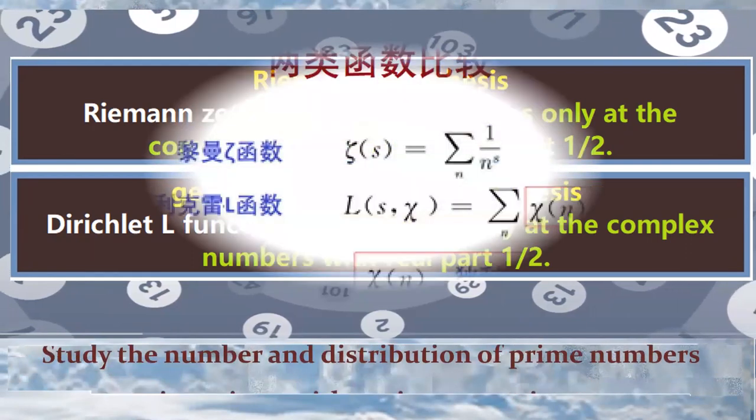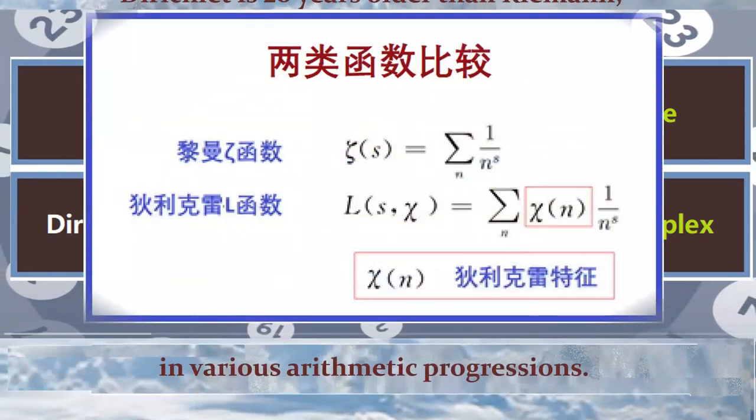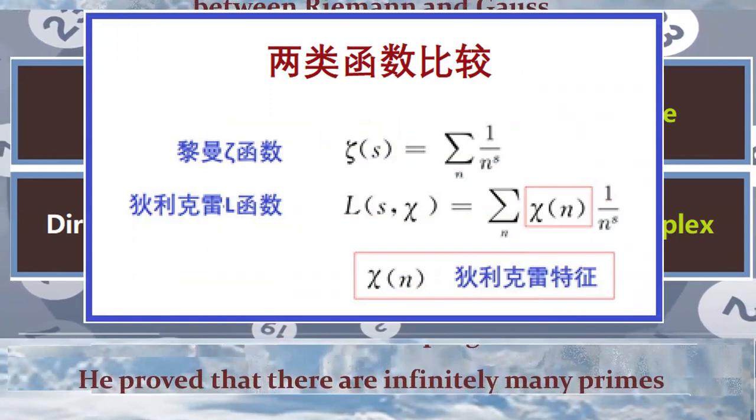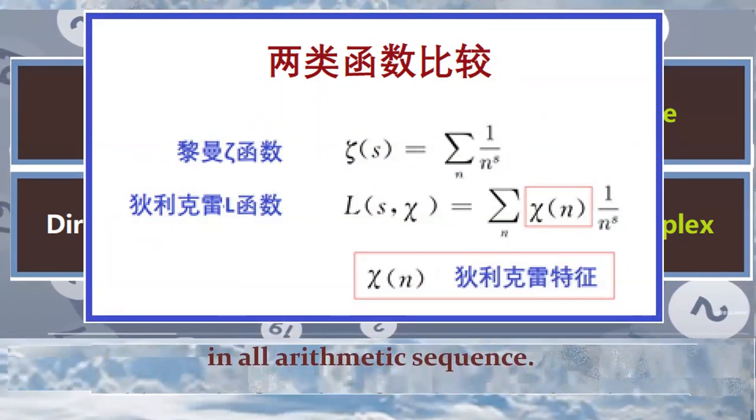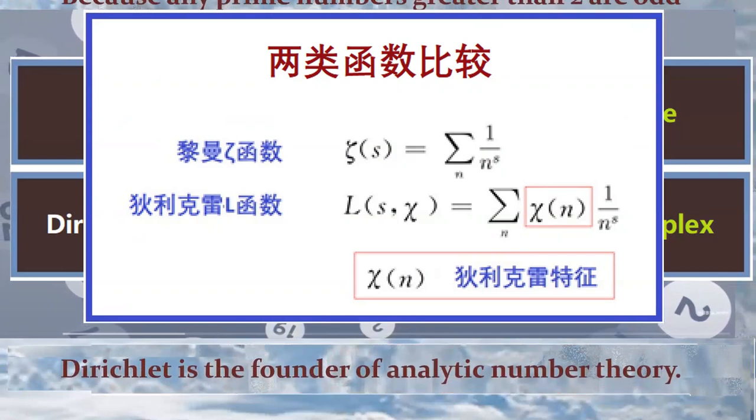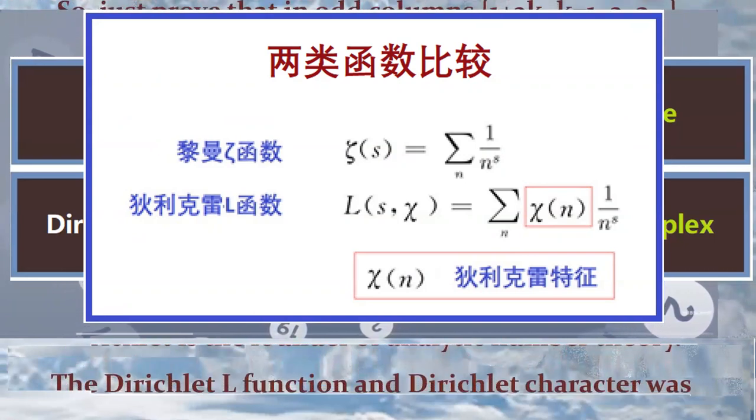Dirichlet studies this kind of problem, study the number and distribution of prime numbers in various arithmetic progressions. He proved that there are infinitely many primes in all arithmetic sequence. Dirichlet is the founder of analytic number theory.